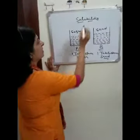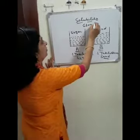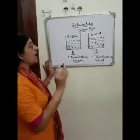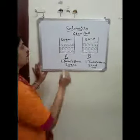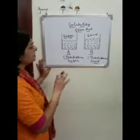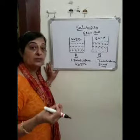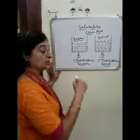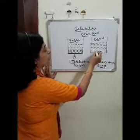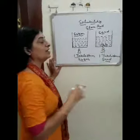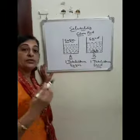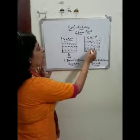Now, stir it well with the help of a glass rod and observe. You will see that the sugar completely dissolves in water — it is completely mixed in water and we are not able to see the sugar. On the other hand, you are able to see the sand at the bottom of the beaker, meaning sand does not disappear or mix in water.